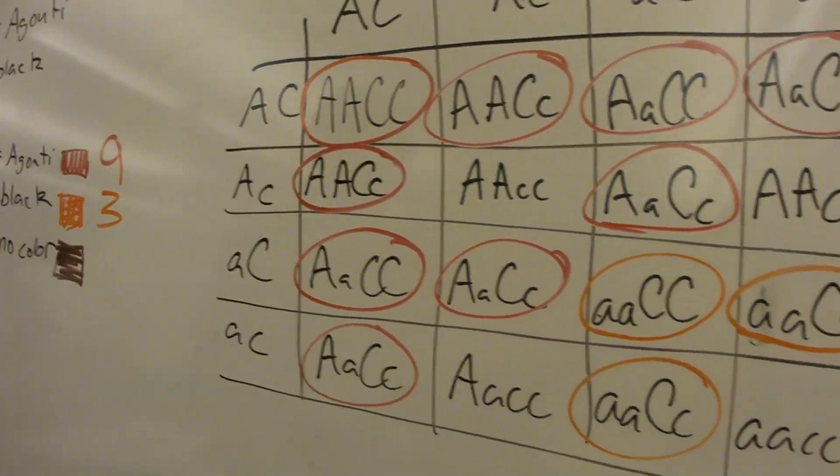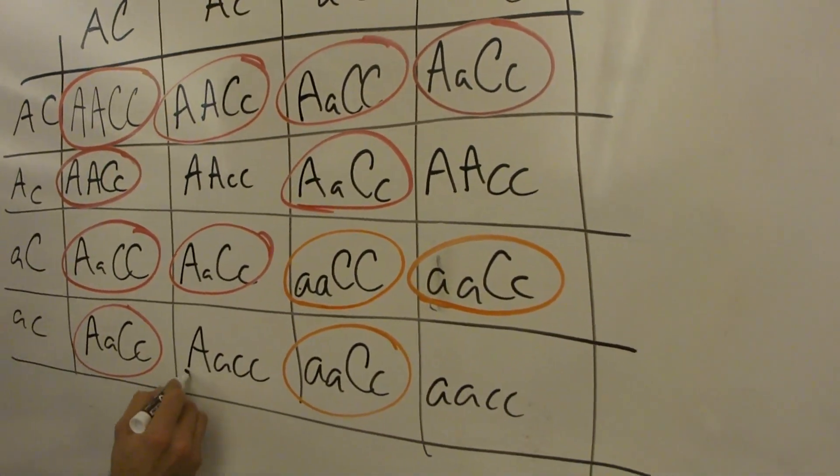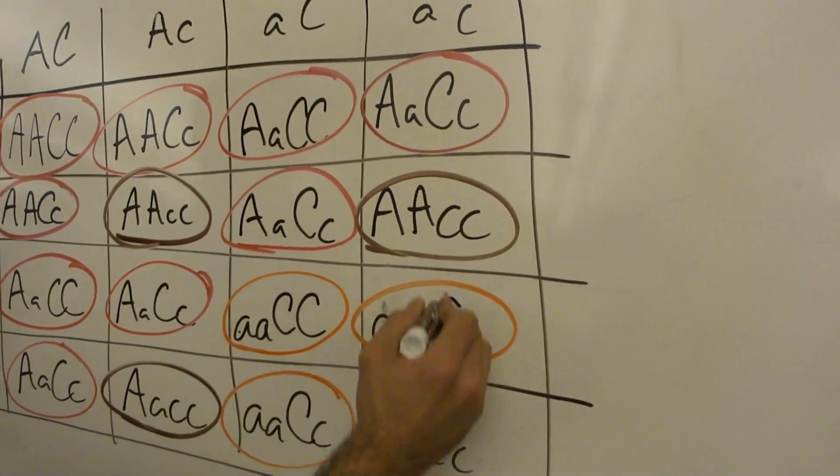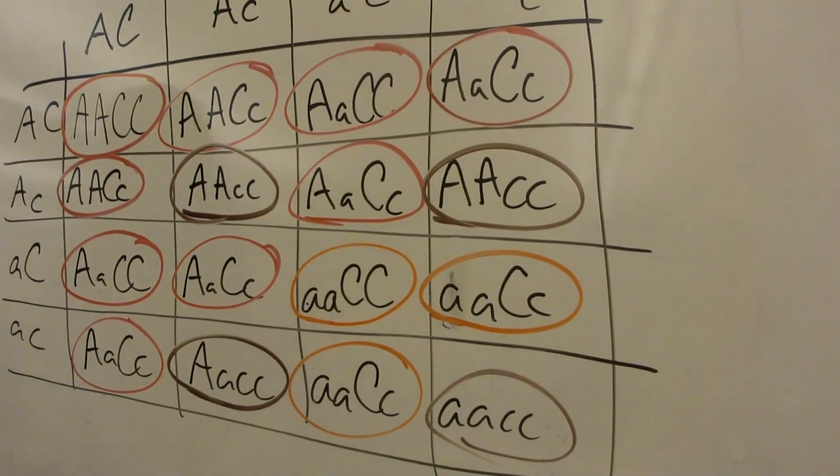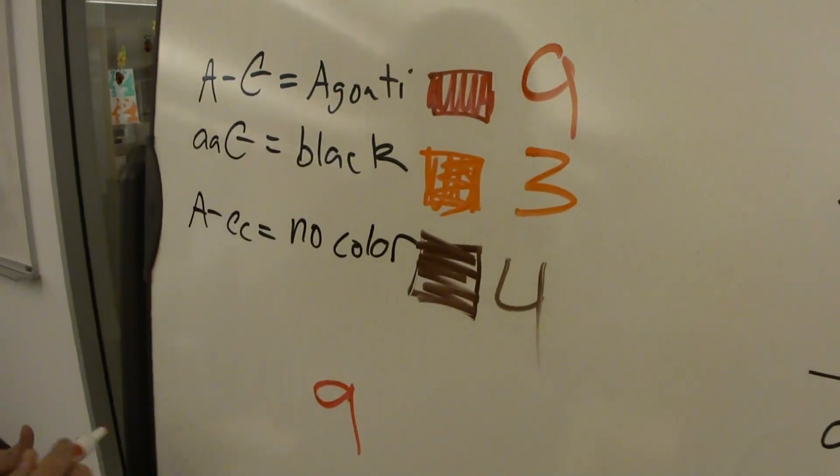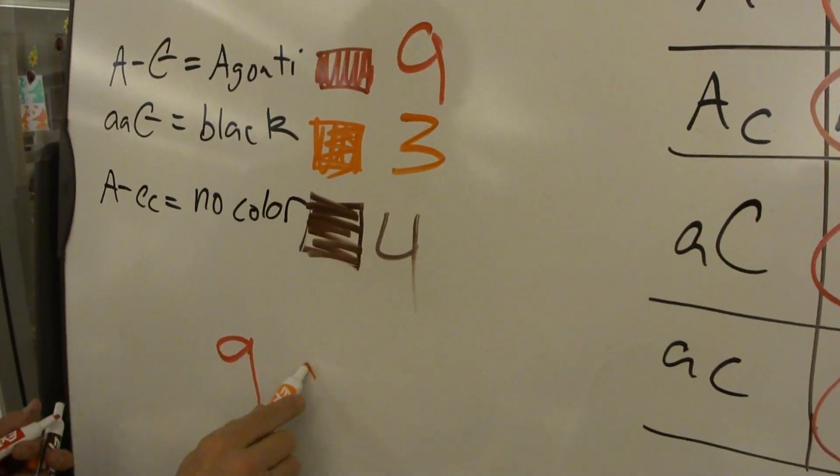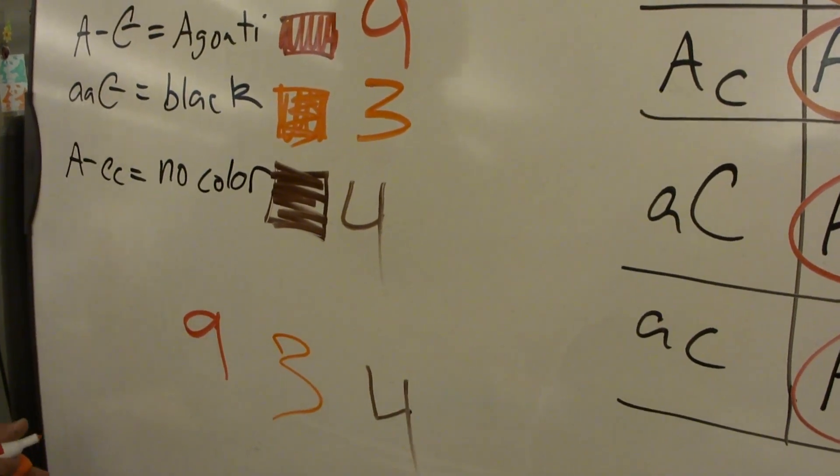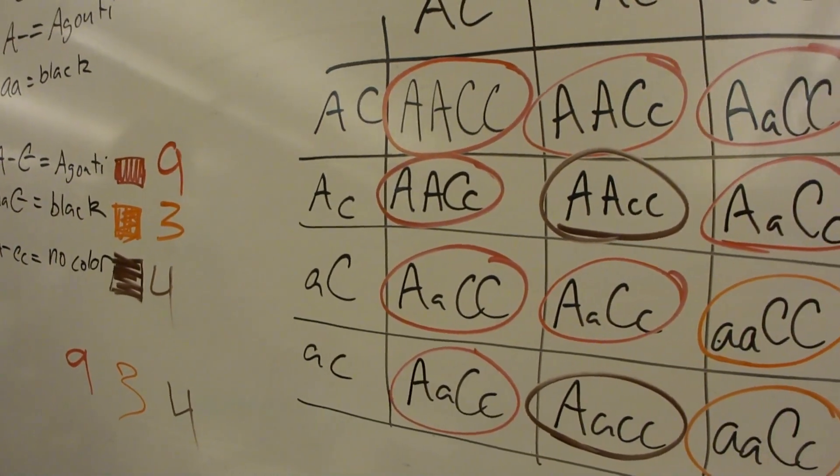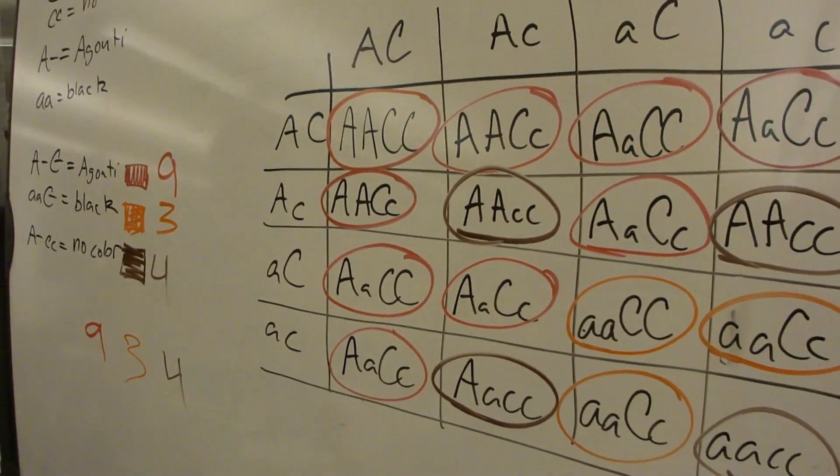So now we need all little c's, basically, because those are going to give us no color. So anything with double little c's. And we get four. So we ended up with a nine, three, to four ratio. And what does that tell us? Recessive epistasis. Yes.